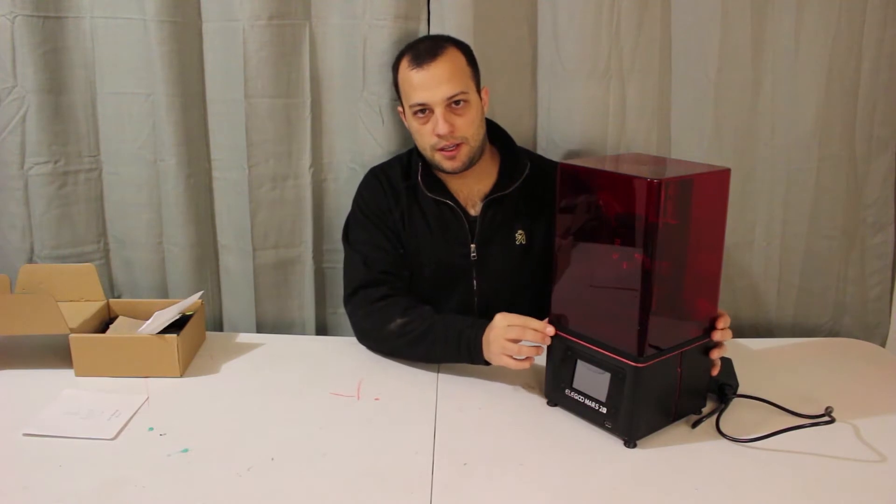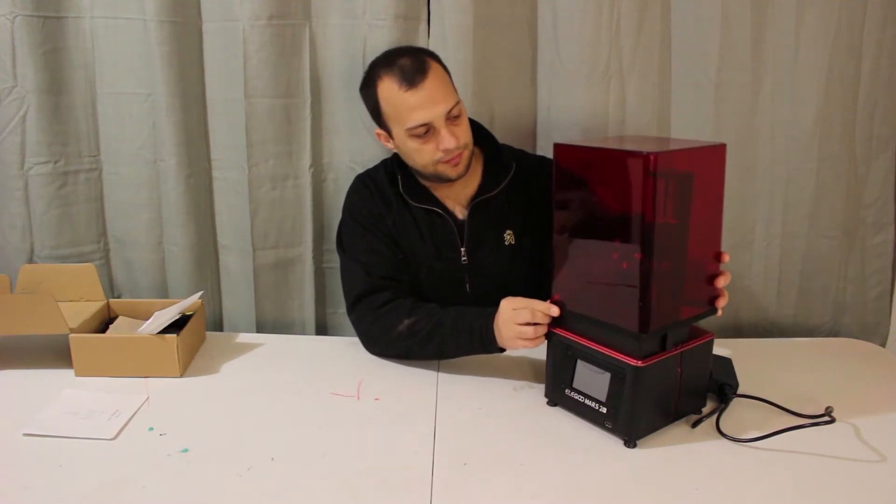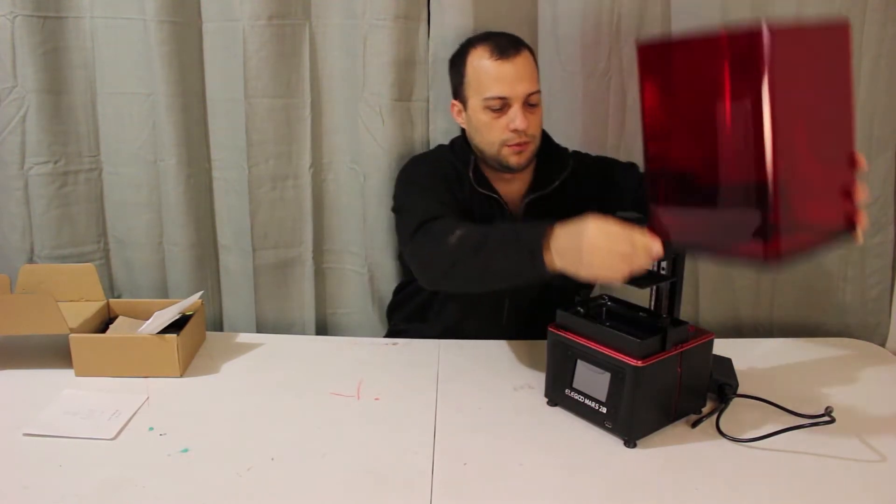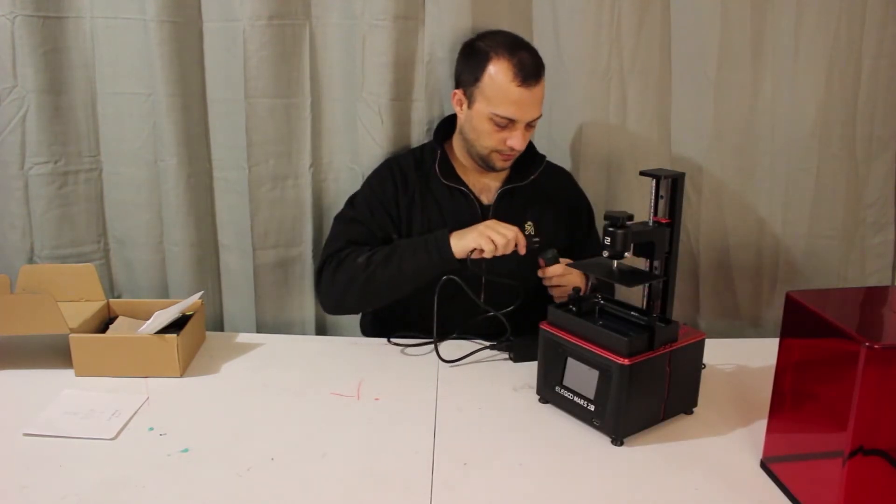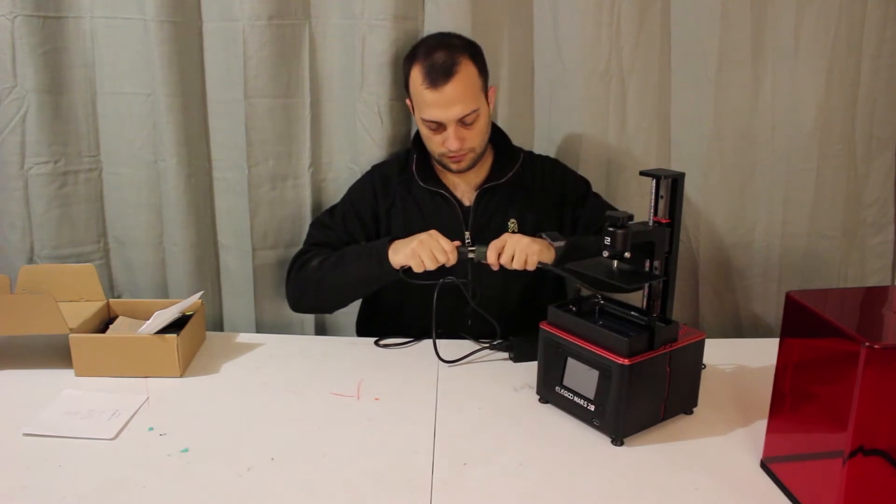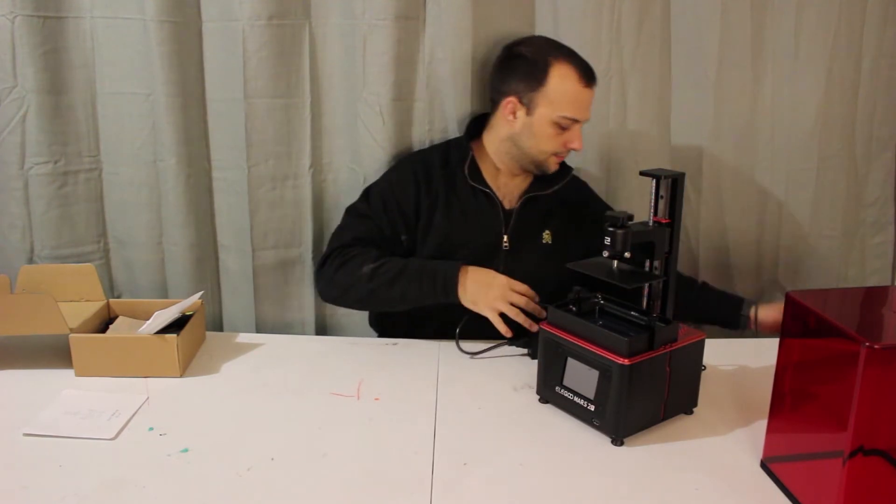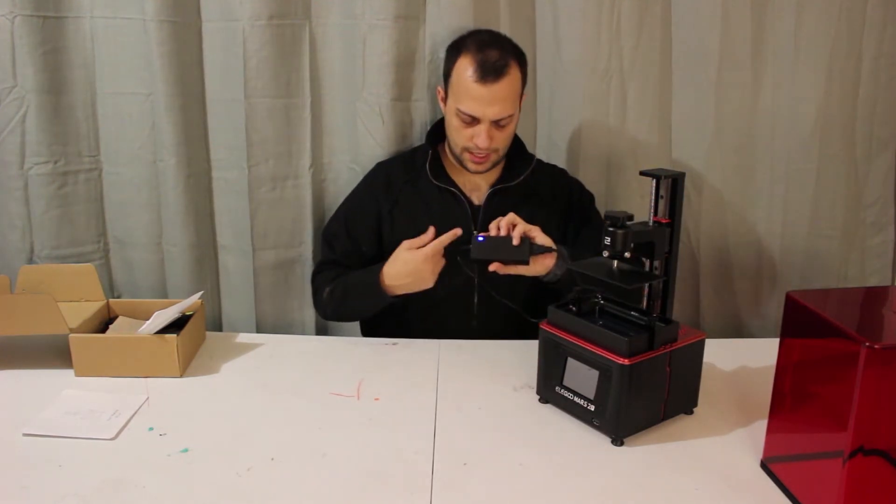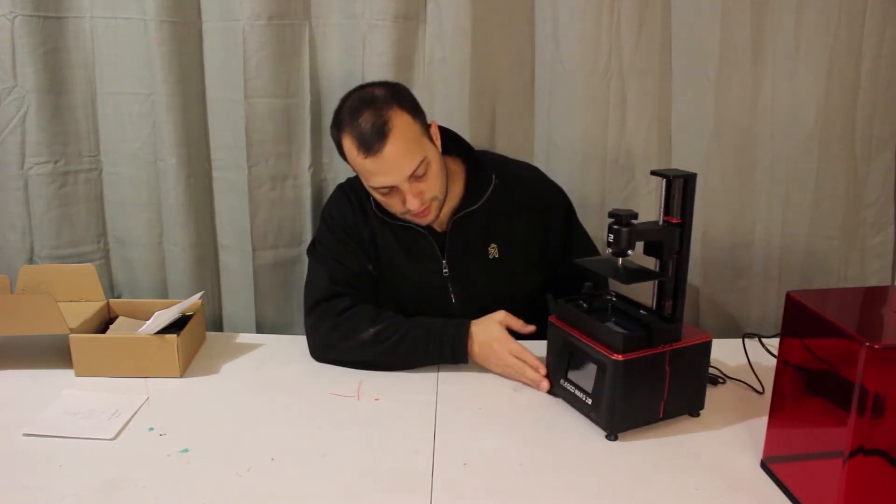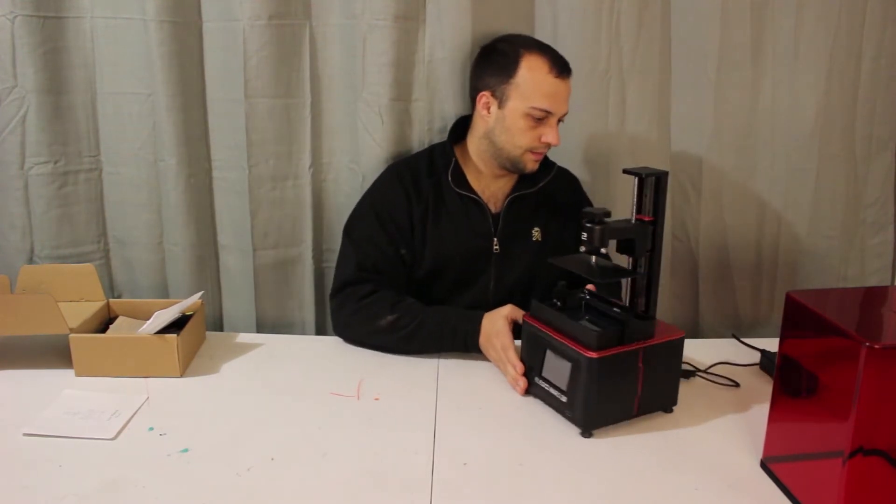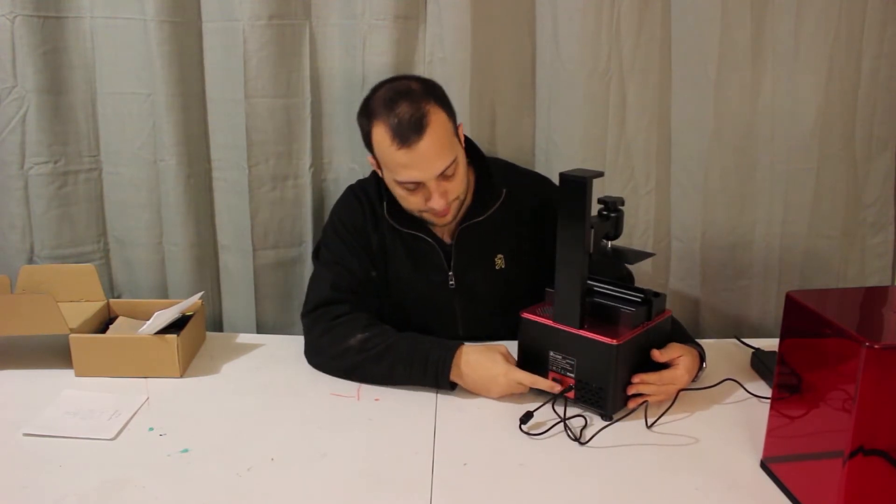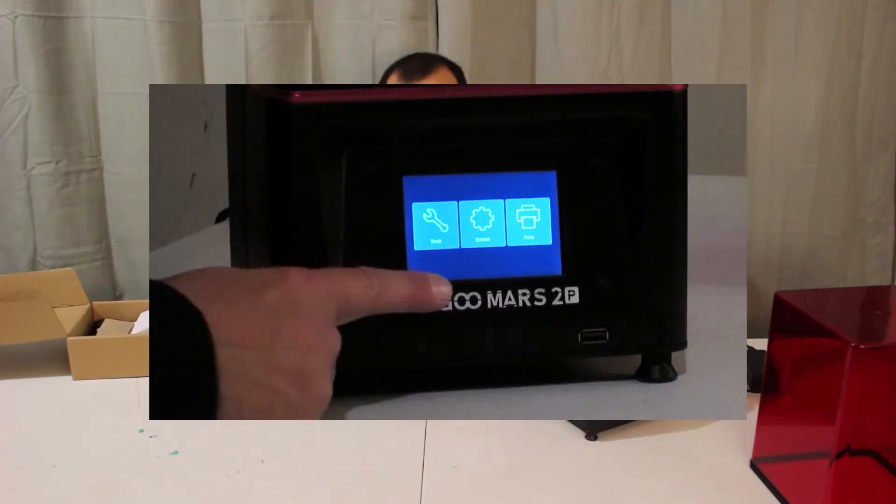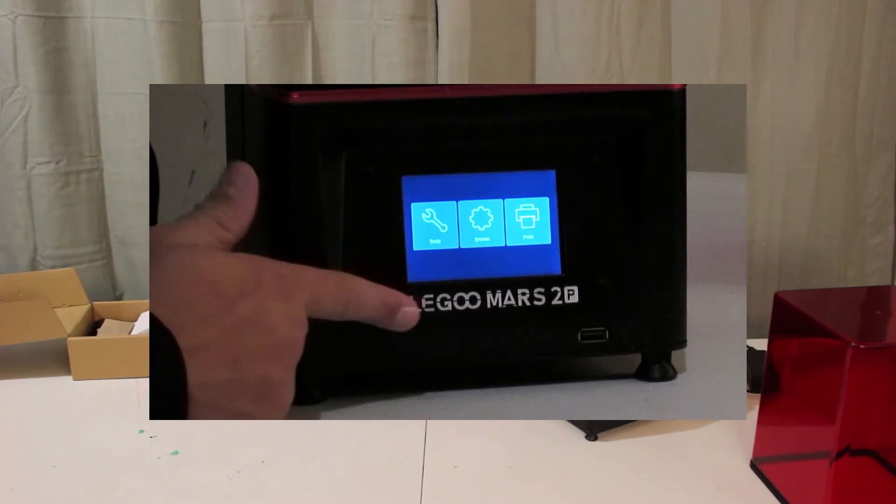Let's go ahead and power on the 3D printer. I'm going to just remove the cover, let's go ahead and plug in this power cord. It's got a little blue light on it, so I'm going to switch it on. There we go, it has a pretty nice interface.